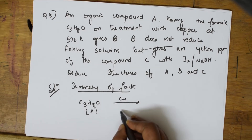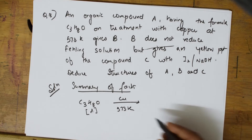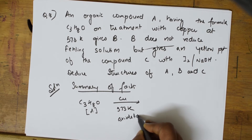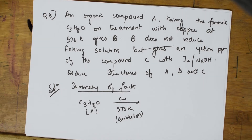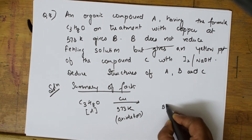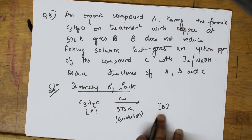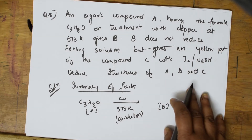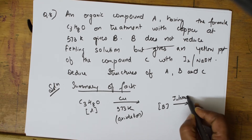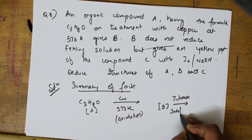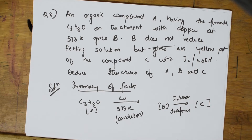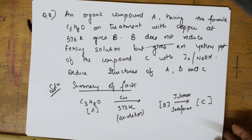Summary of facts: C3H8O is compound A. Treated with copper at 573 Kelvin — copper causes oxidation — it gives compound B. They did not give the formula of B, but B on treatment with I2 and NaOH undergoes iodoform reaction, confirming compound C as the iodoform precipitate.